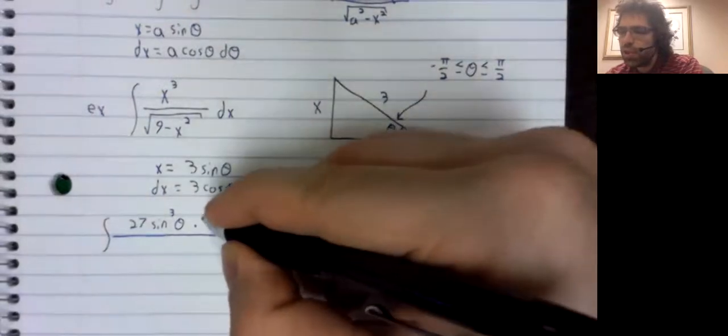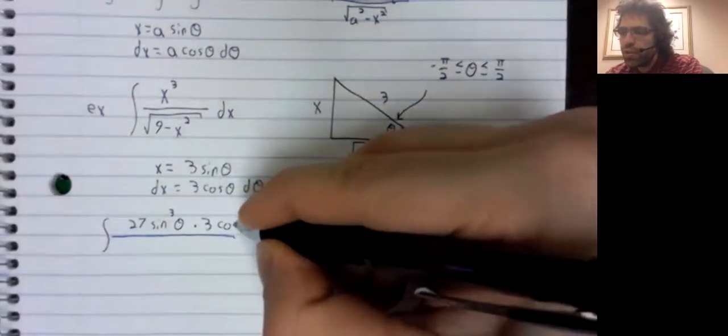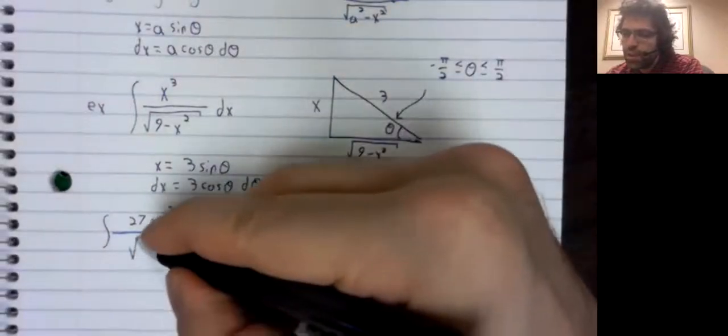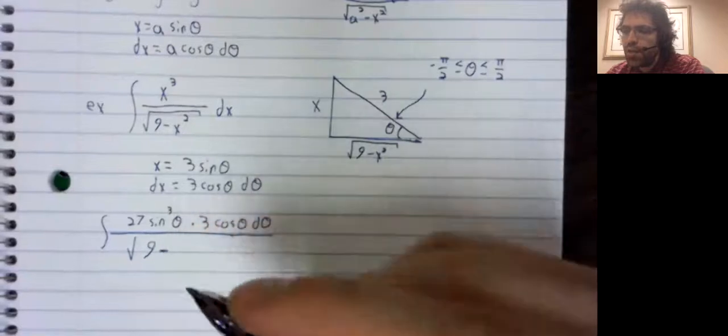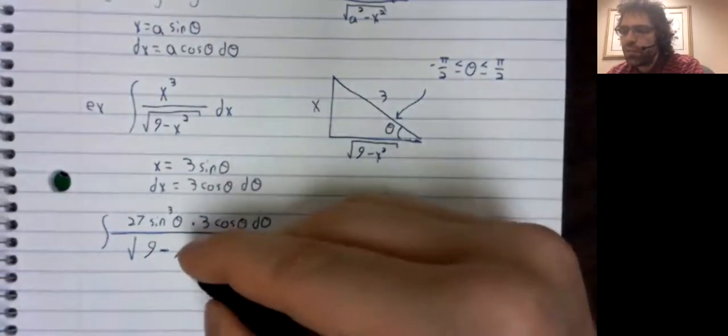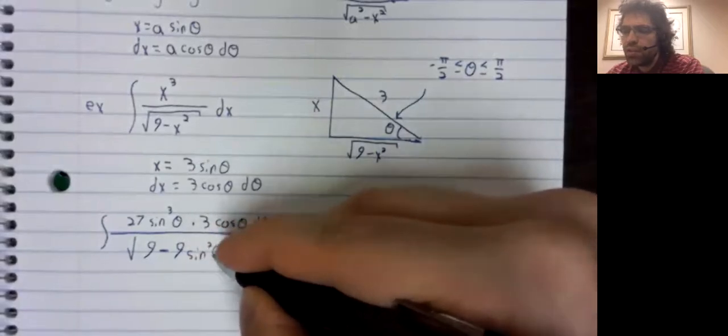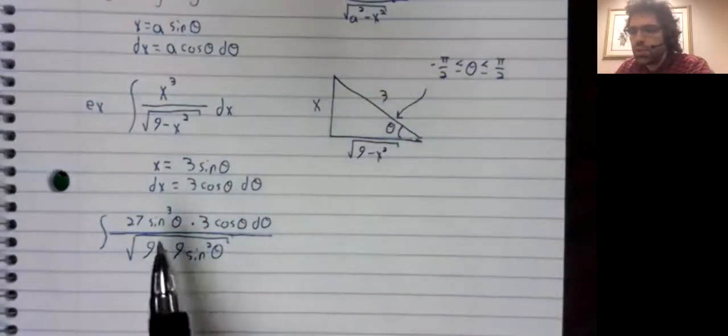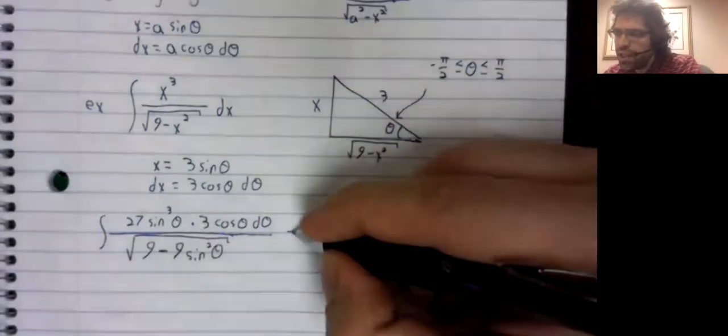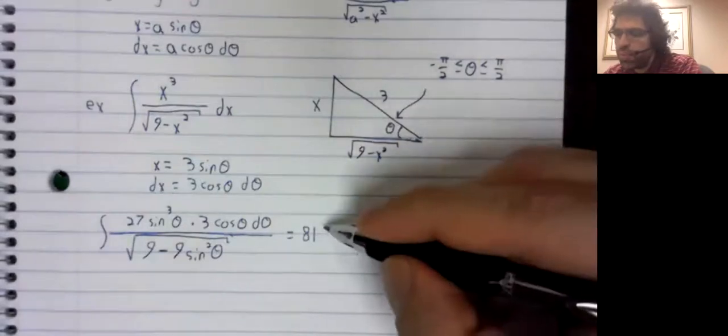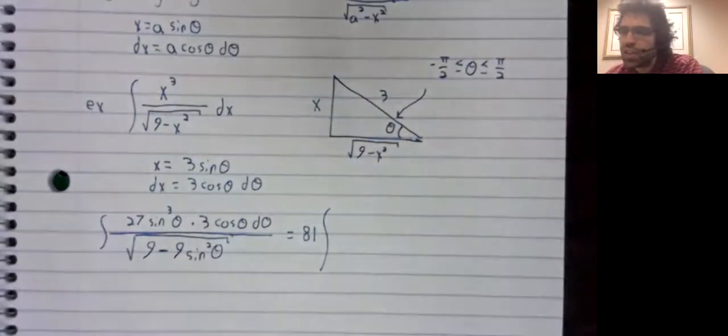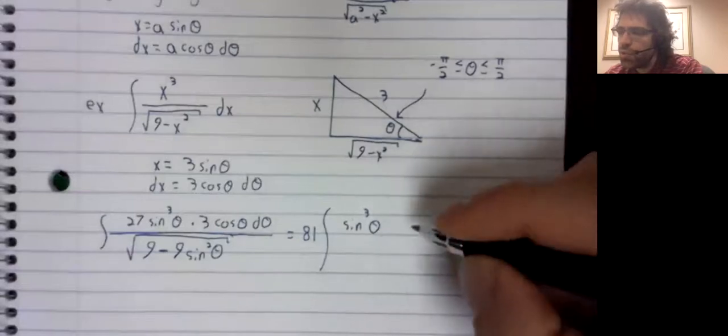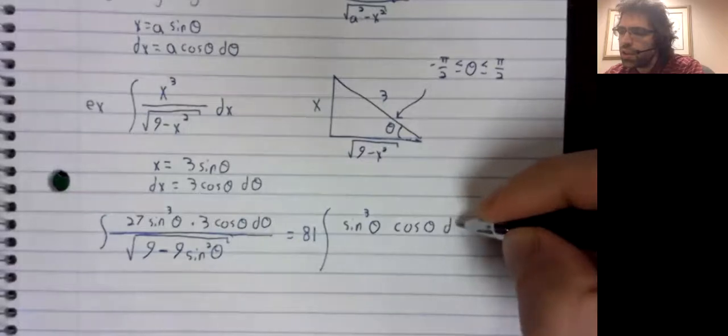So the integral, times three is 81. That doesn't seem to be doing us any good, and it's a constant, we'll just pull it out. Sine cubed theta times cosine theta d theta, divided by...